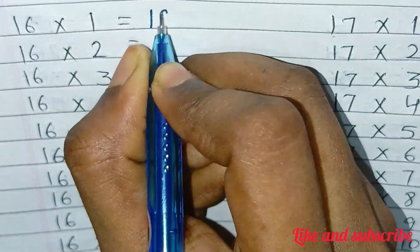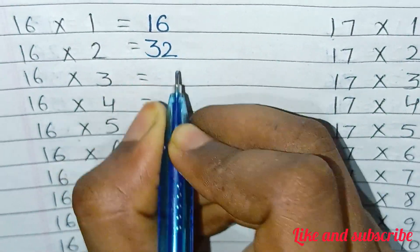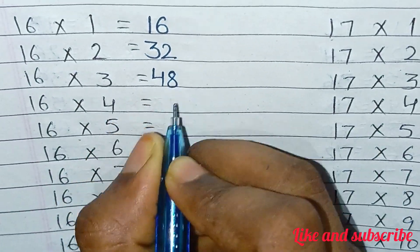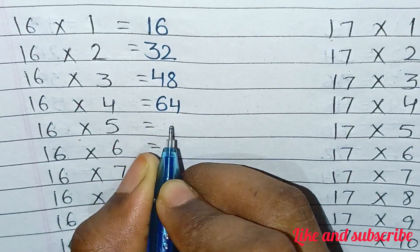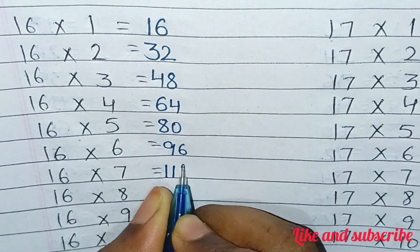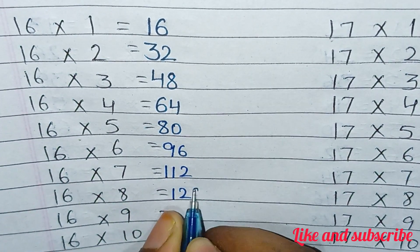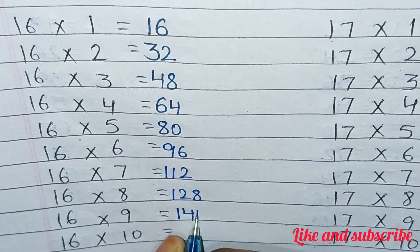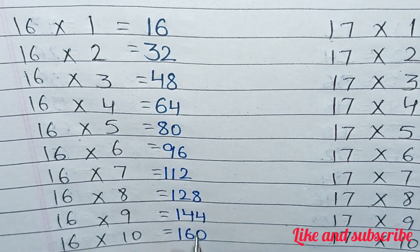16×1=16, 16×2=32, 16×3=48, 16×4=64, 16×5=80, 16×6=96, 16×7=112, 16×8=128, 16×9=144, 16×10=160.